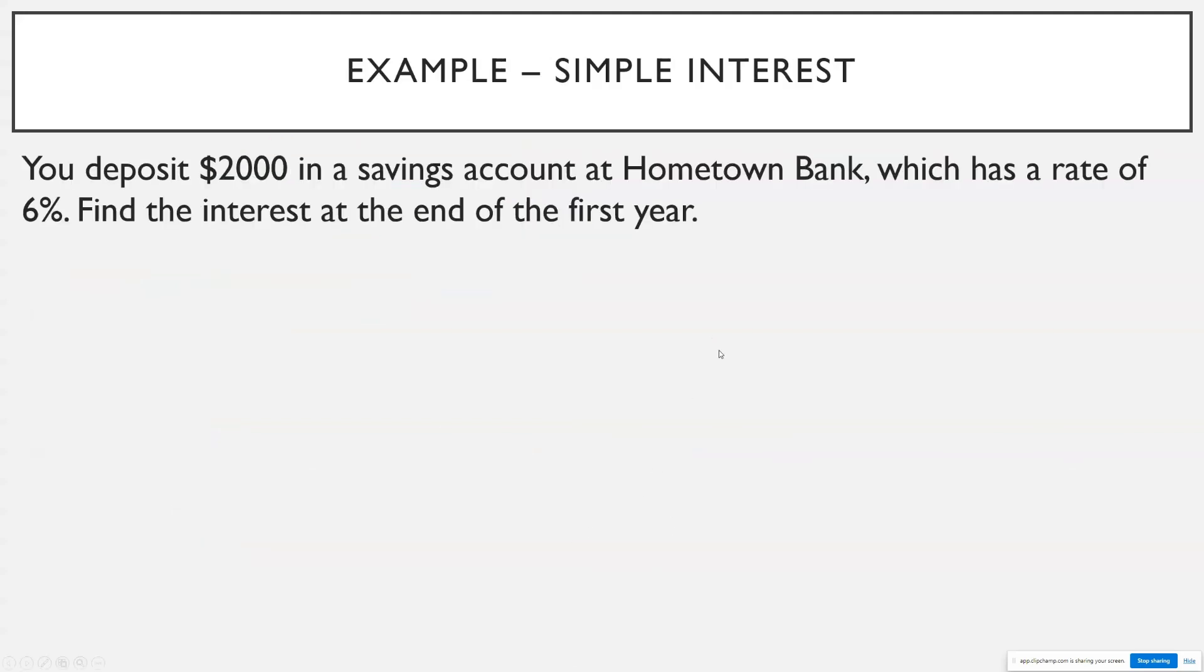So here's the first problem. Suppose you deposit $2,000 in a savings account at Hometown Bank, which has a rate of 6%. Find the interest at the end of the first year. So we have this formula: Interest is equal to principal times rate times time. I'm asking us to find the interest.